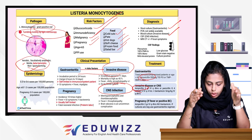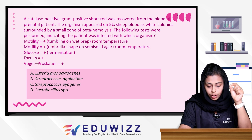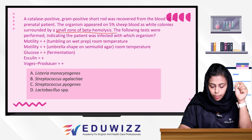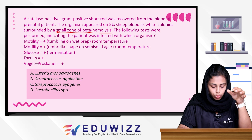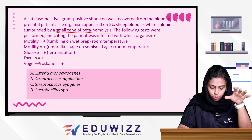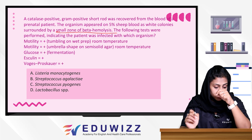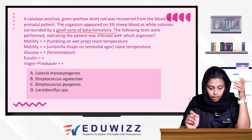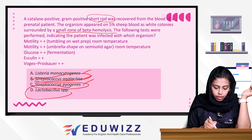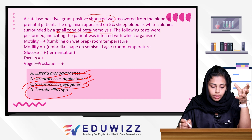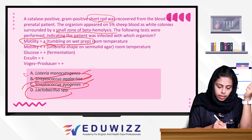Practice question: A catalase-positive gram-positive short rod was recovered from the blood of a prenatal patient. The organism appeared on 5% sheep blood agar with a white colony surrounded by a small zone of beta hemolysis. Tests performed: motility plus tumbling on wet preparation at room temperature; motility plus umbrella shape in semi-solid agar at room temperature; glucose fermenting; esculin fermenting; VP positive. The answer is A — Listeria Monocytogenes, identified by tumbling motility, umbrella motility, catalase positive, and gram-positive rod.